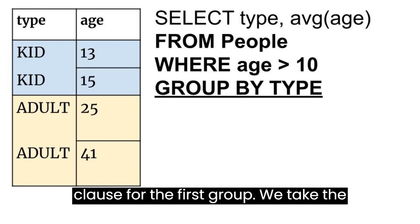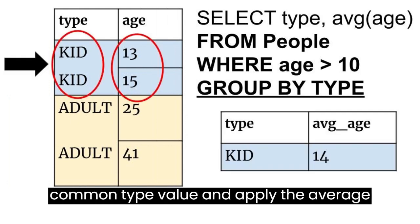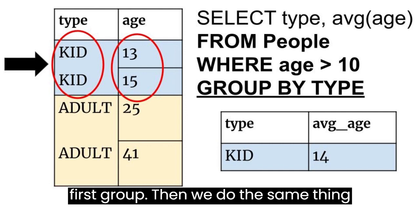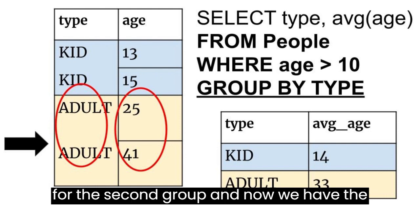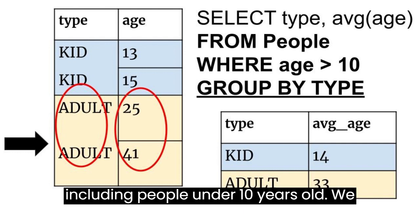Finally, let's run the select clause. For the first group, we take the common type value and apply the average aggregate function to all the ages in the first group. Then we do the same thing for the second group, and now we have the average age for each type, without including people under 10 years old.